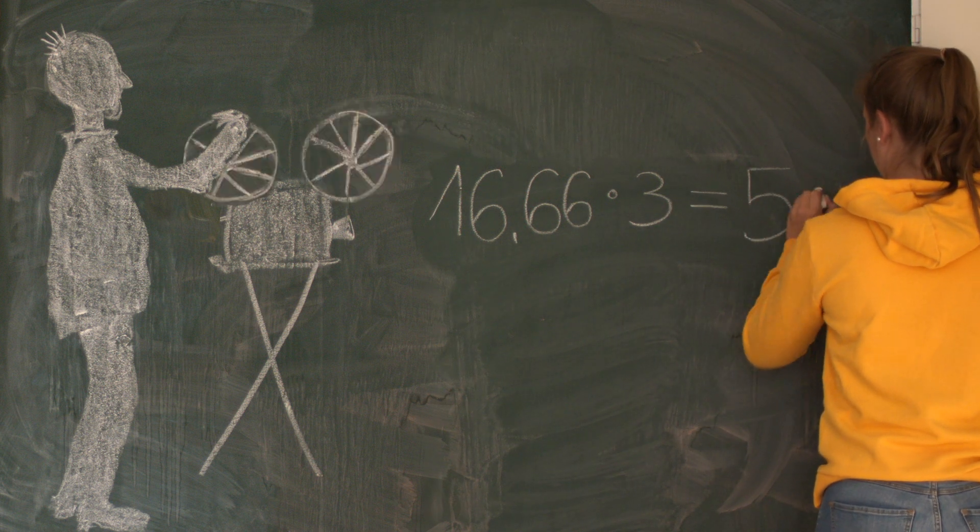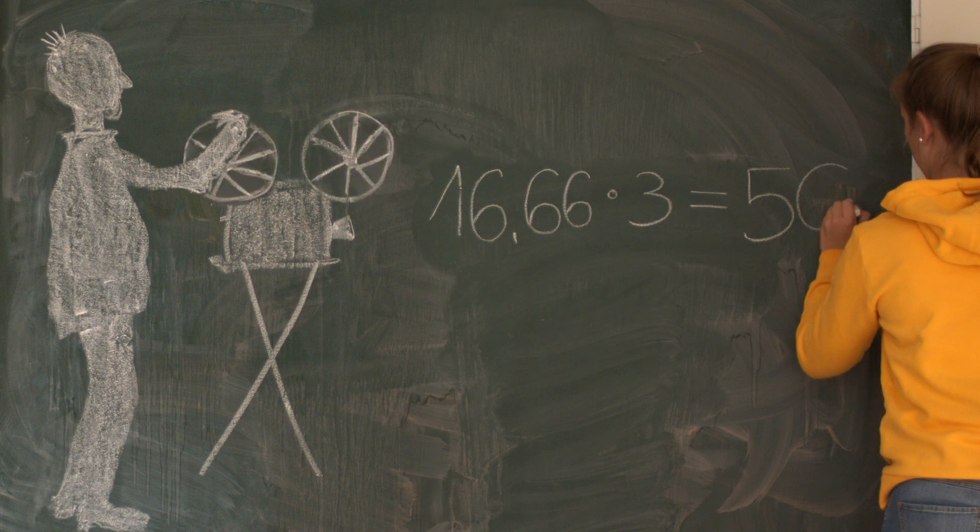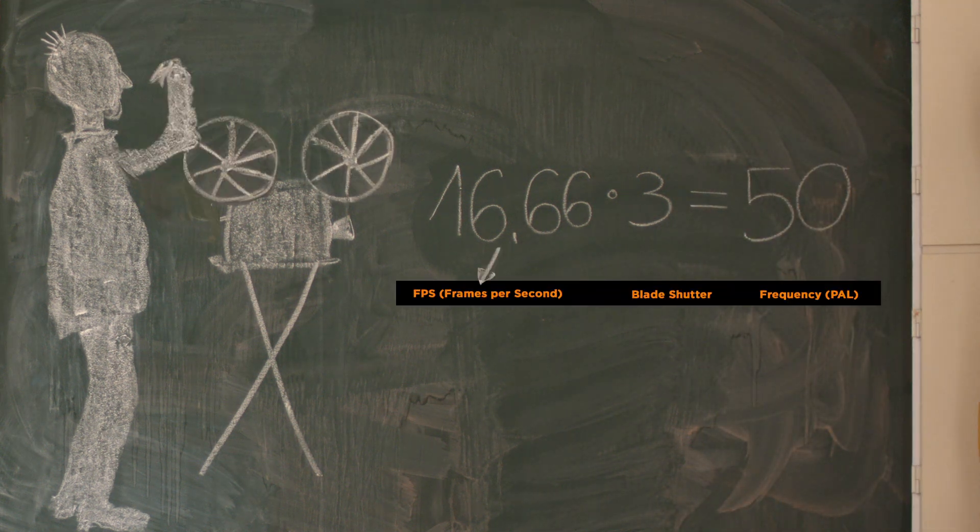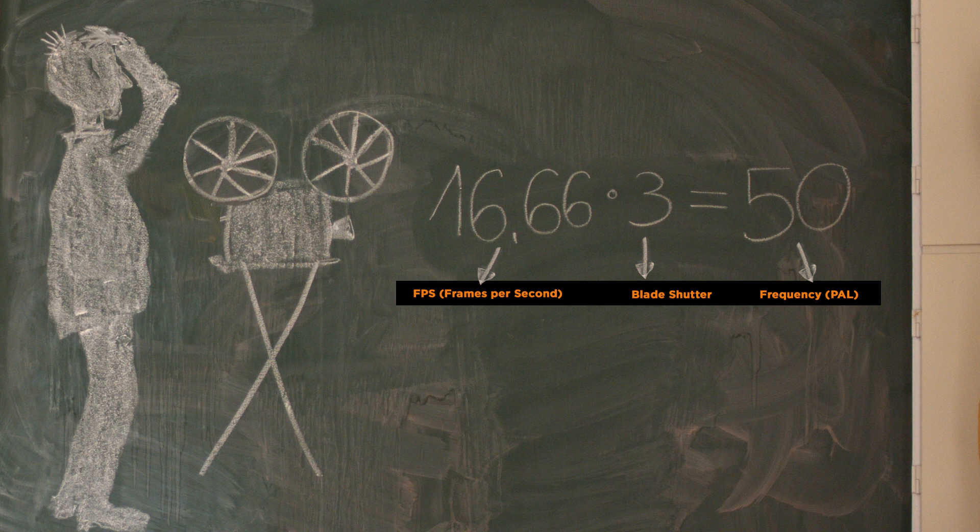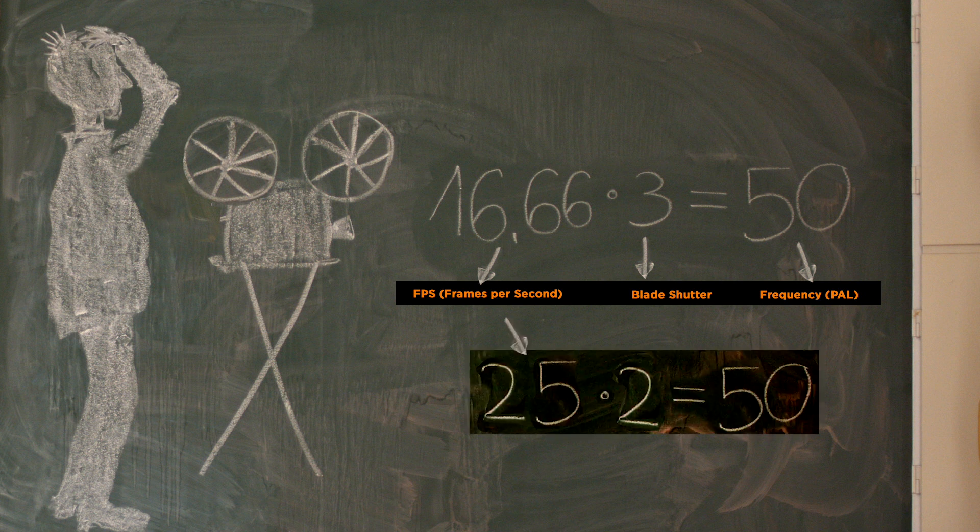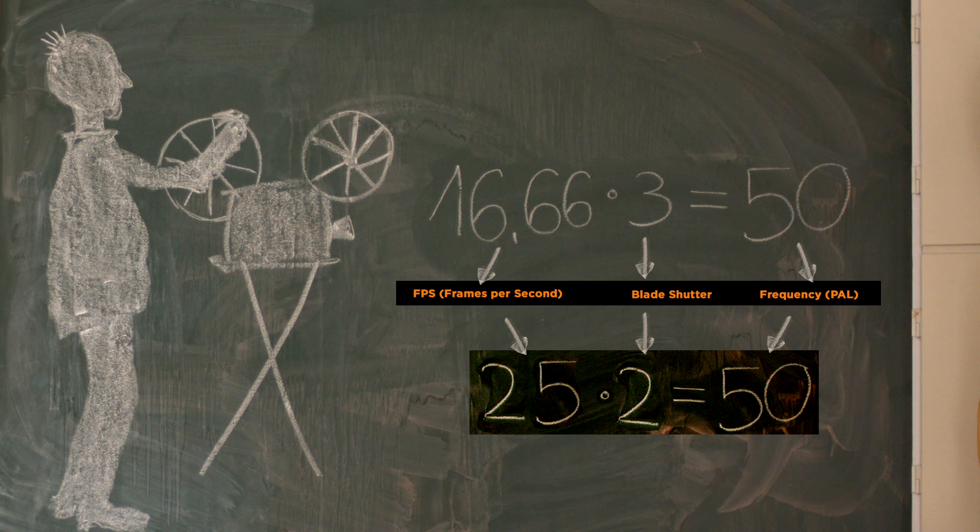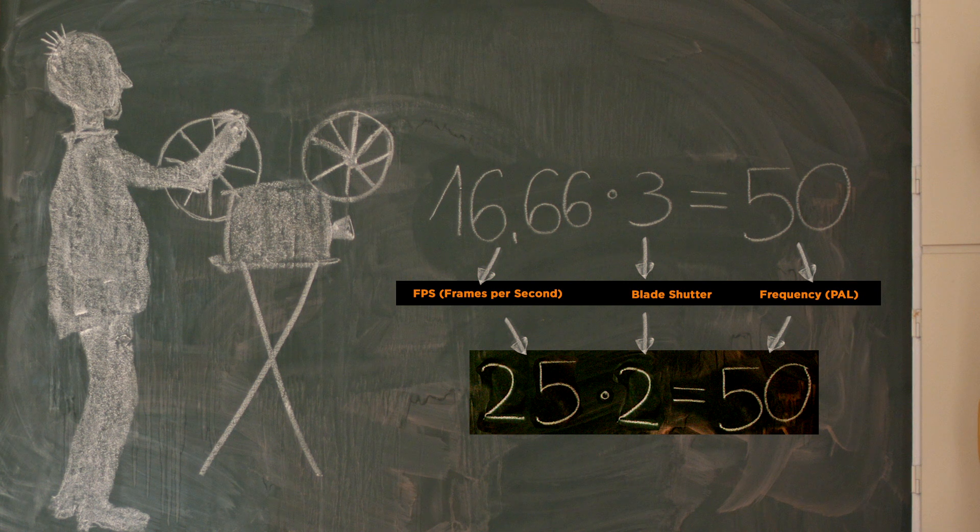In order to exclude any residual flicker, Film Digital recommends the installation of a two-blade shutter when using cameras with very large sensors such as Full Format or Super 35 and simultaneously high digitizing resolution of 4K or 6K.